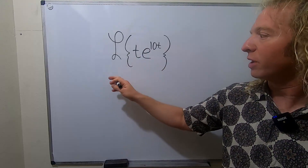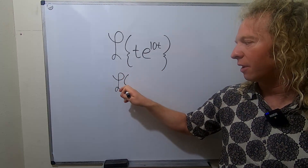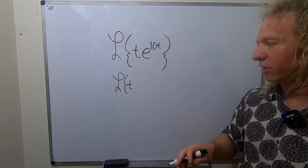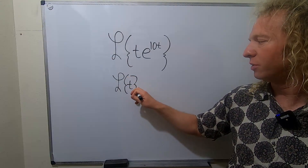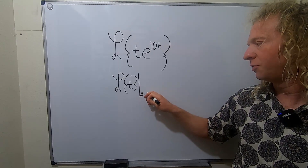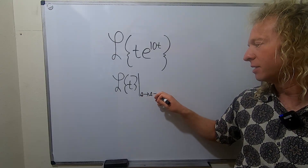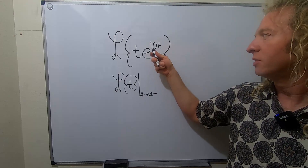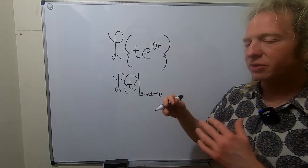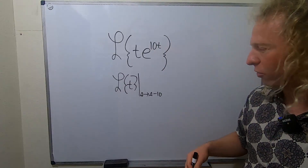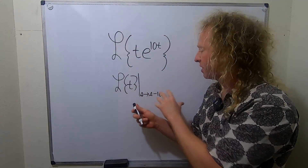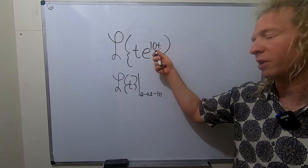Basically, we can write this as the Laplace of t, and you can replace the exponential with a shift. You draw a line and go from s to s minus whatever number is in the exponent. So in this case, there's a 10, so it's s minus 10. This is called the first translation theorem, or the shifting theorem. Whenever you have an exponential, you can just drop it and write s minus whatever number is there.